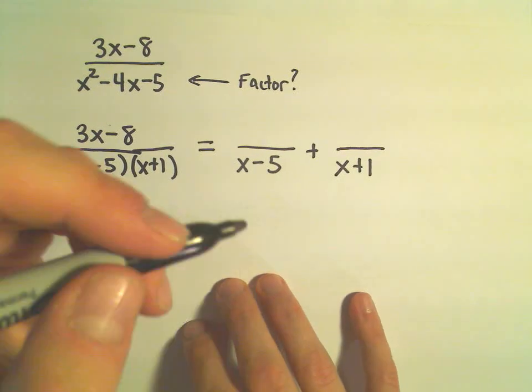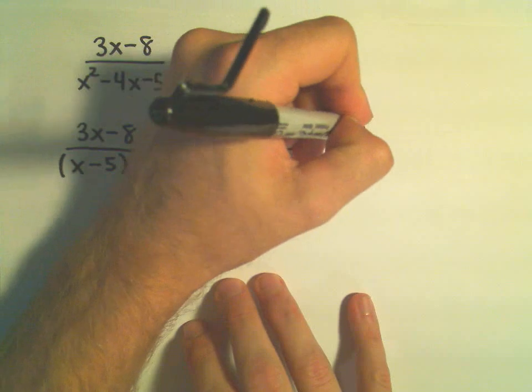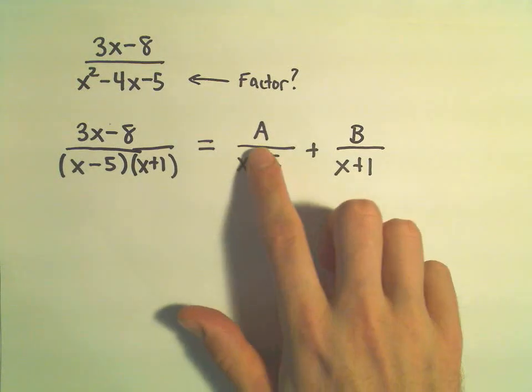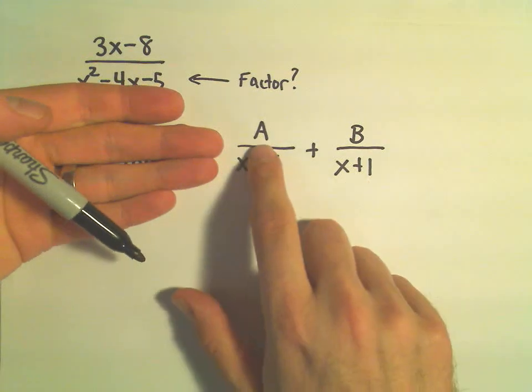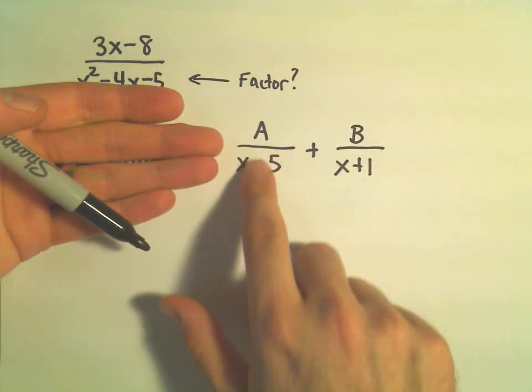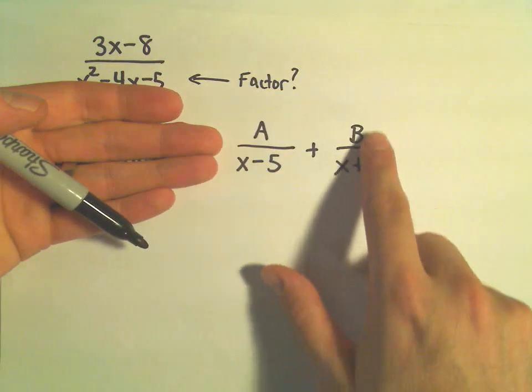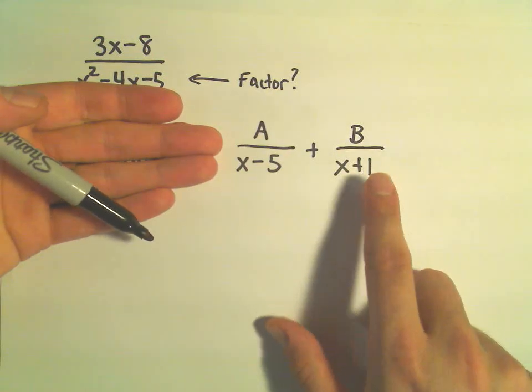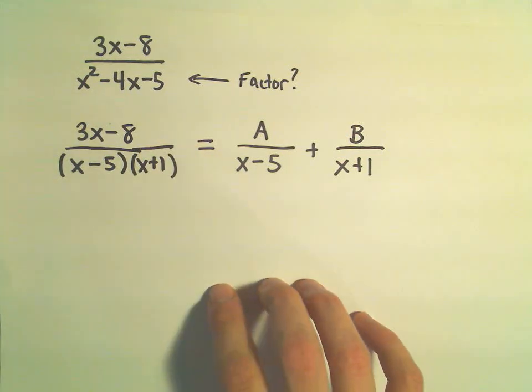So what we have to do is we have to figure out constants A and B. We have to figure out two values for A and B so that if we basically find our values for A and B, suppose we did get common denominators by multiplying top and bottom by x plus 1, top and bottom by x minus 5, when we stick that back together, we want to get this original rational function back.